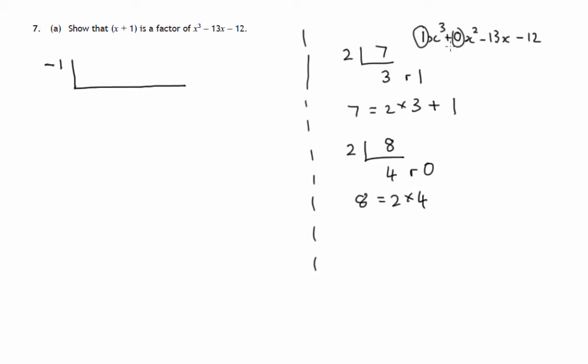So it's the 1, it's the 0, it's the minus 13 and the minus 12 that we write down. These are the coefficients of the powers of x. So 1, 0, negative 13 and negative 12.